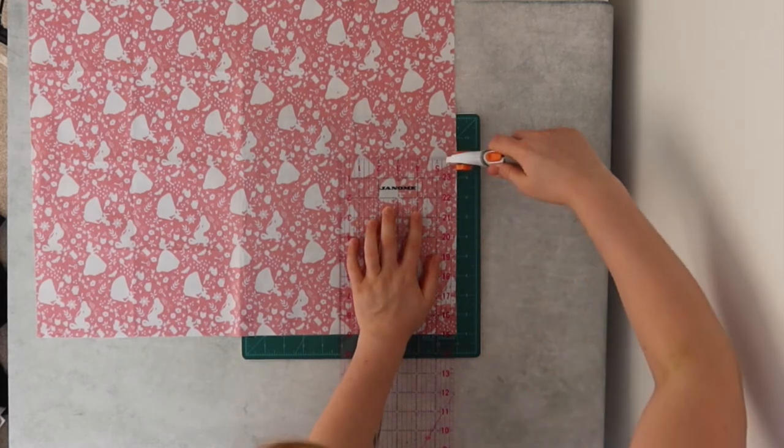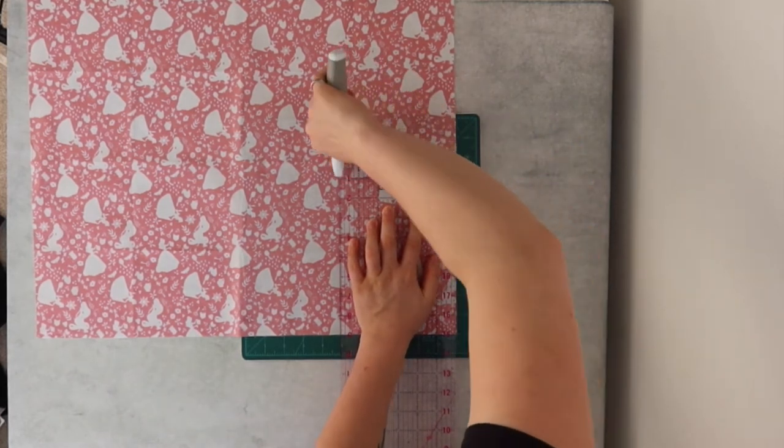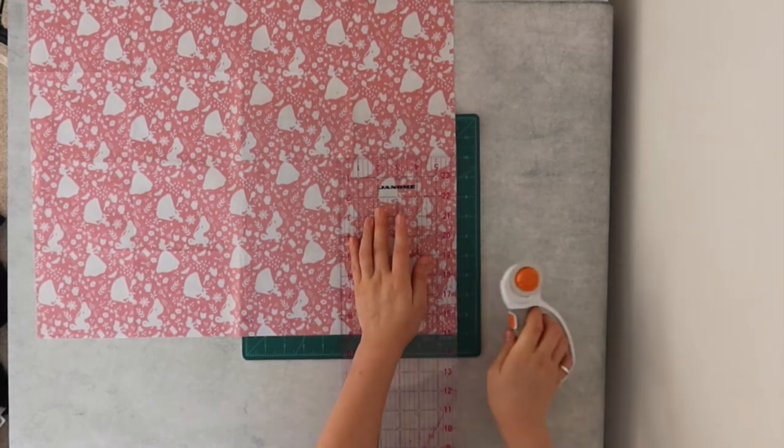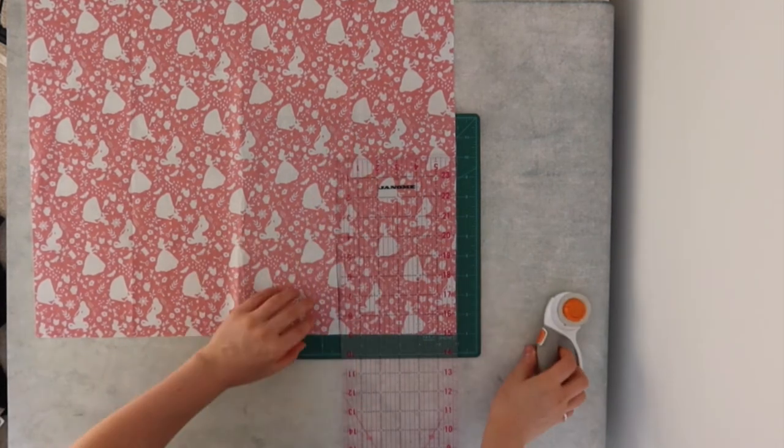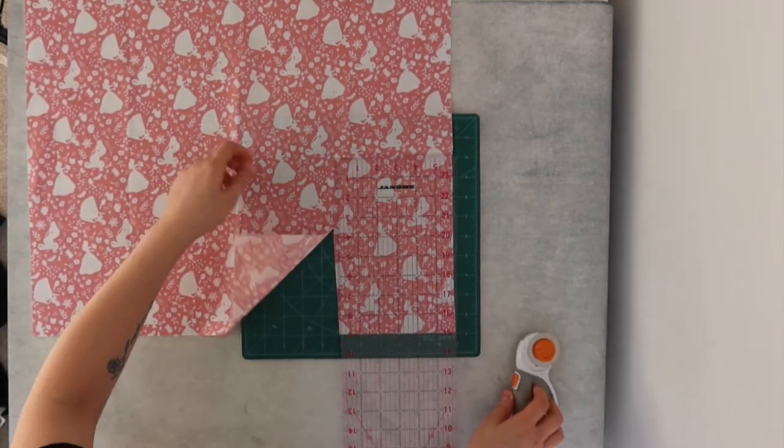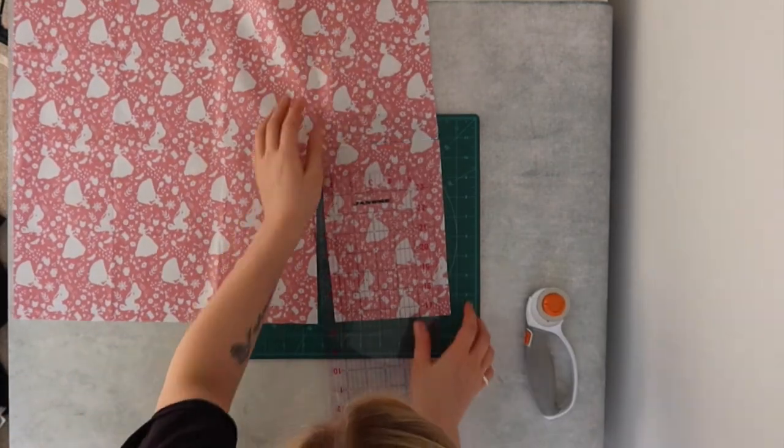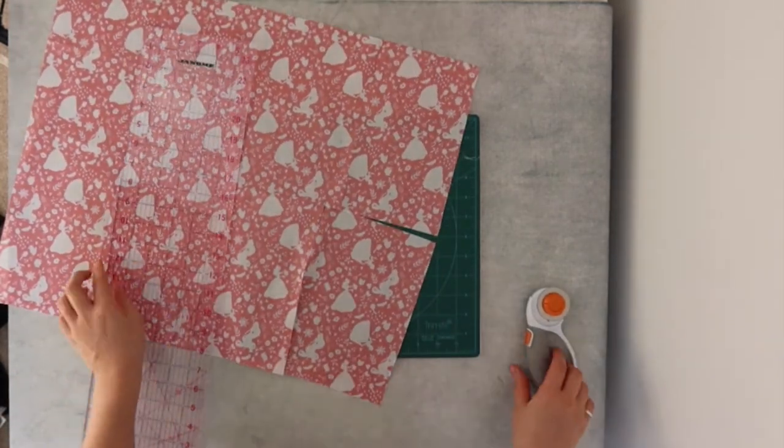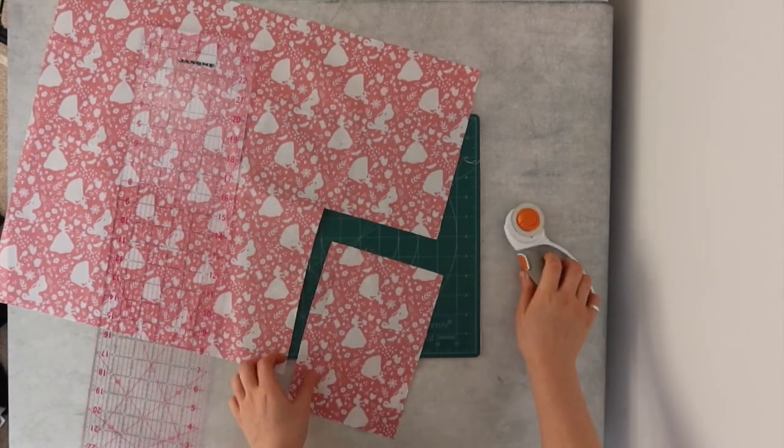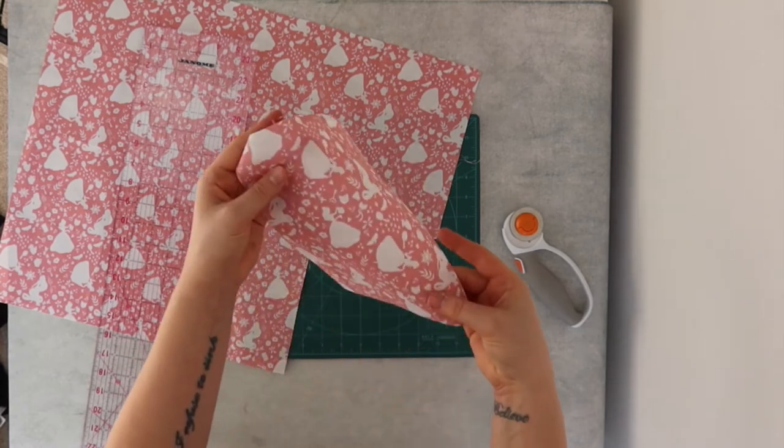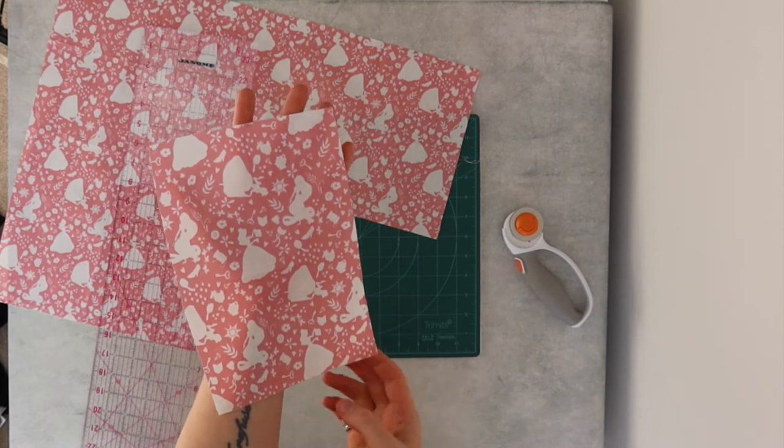So I'm going to simply put the cross there and back down. So as you can see, we've got our first piece, which is 6 inches by 9 inches.